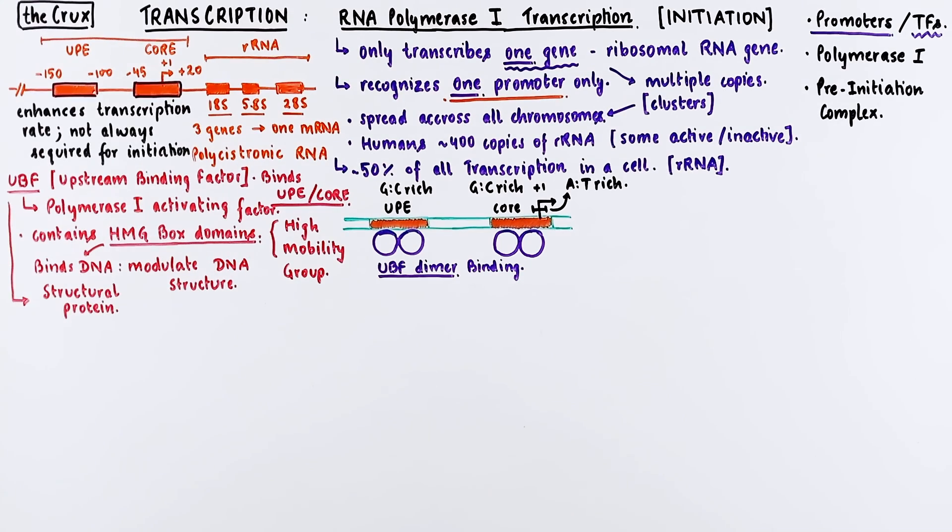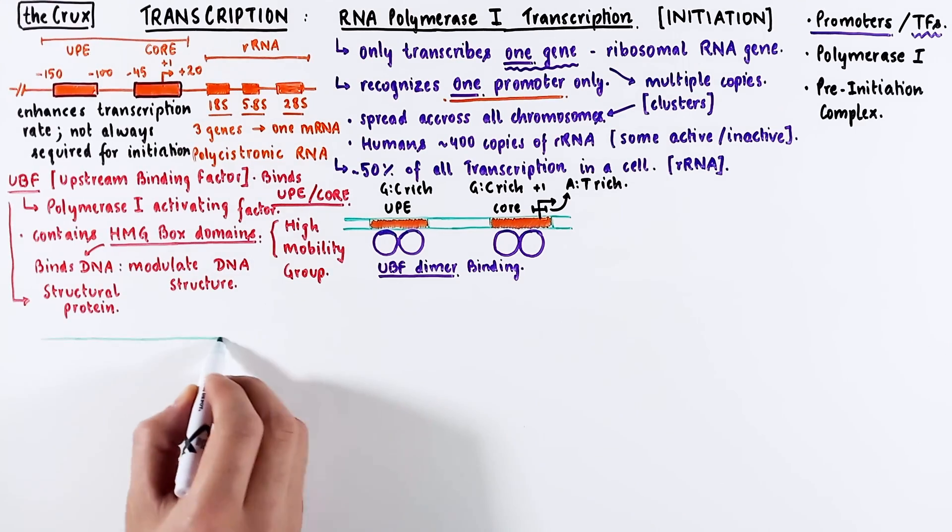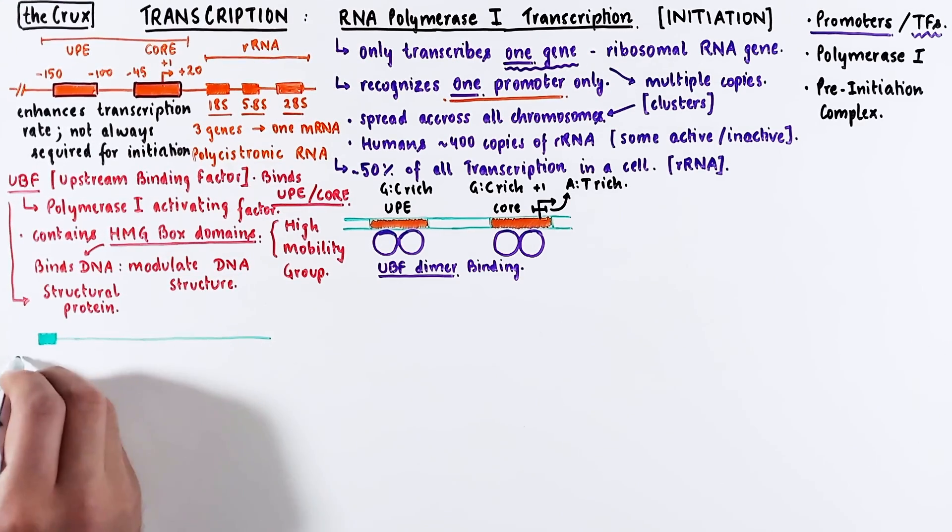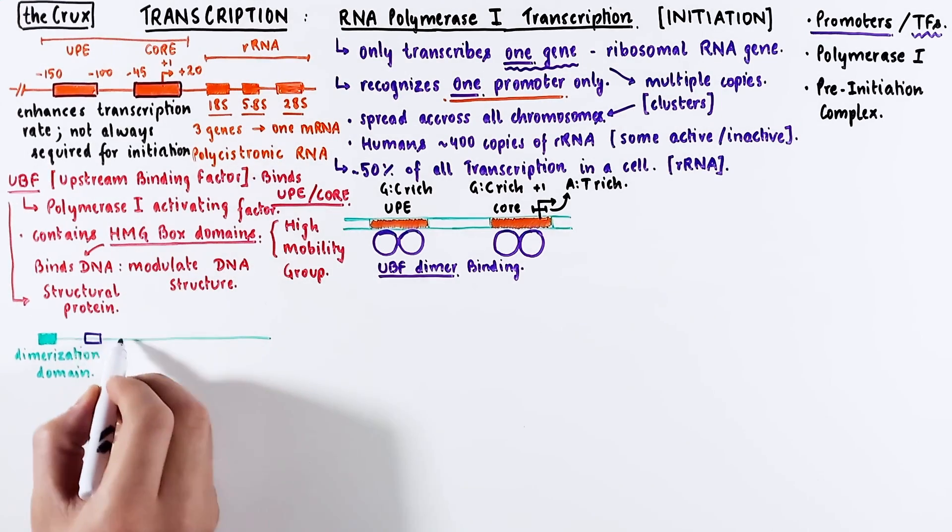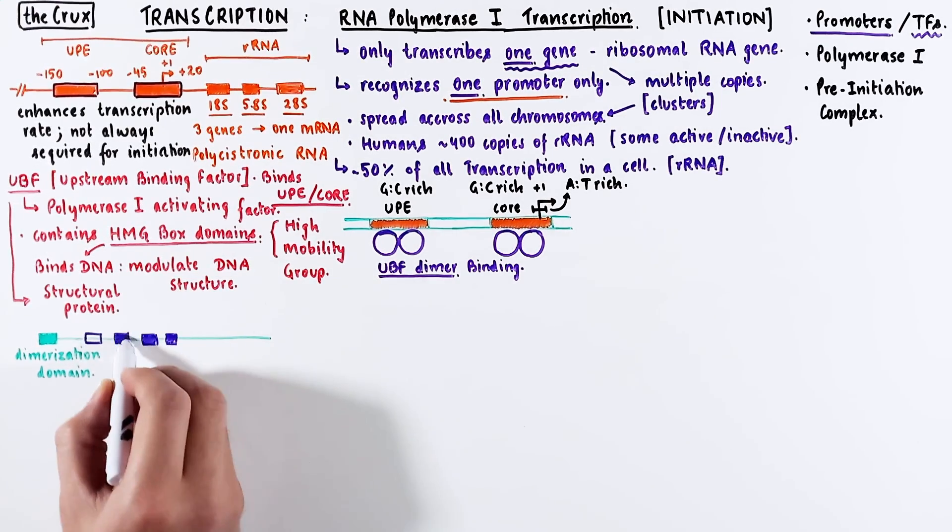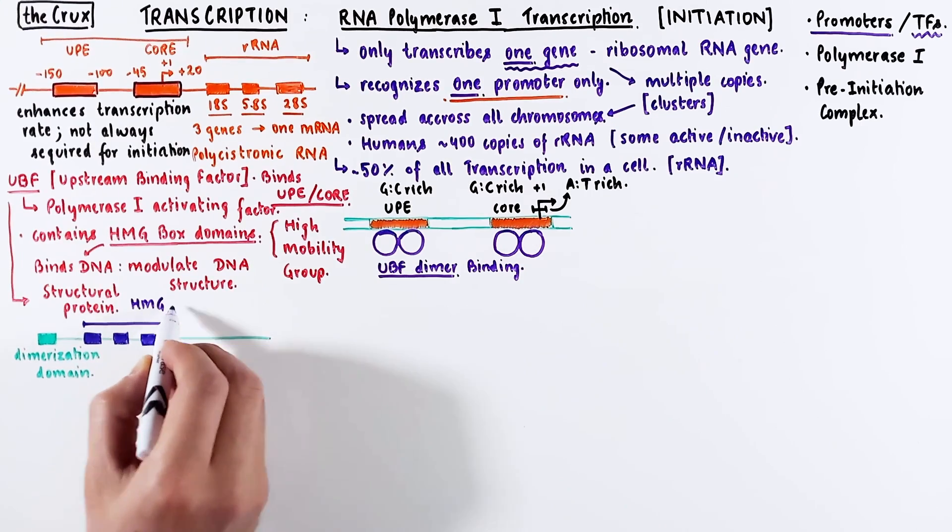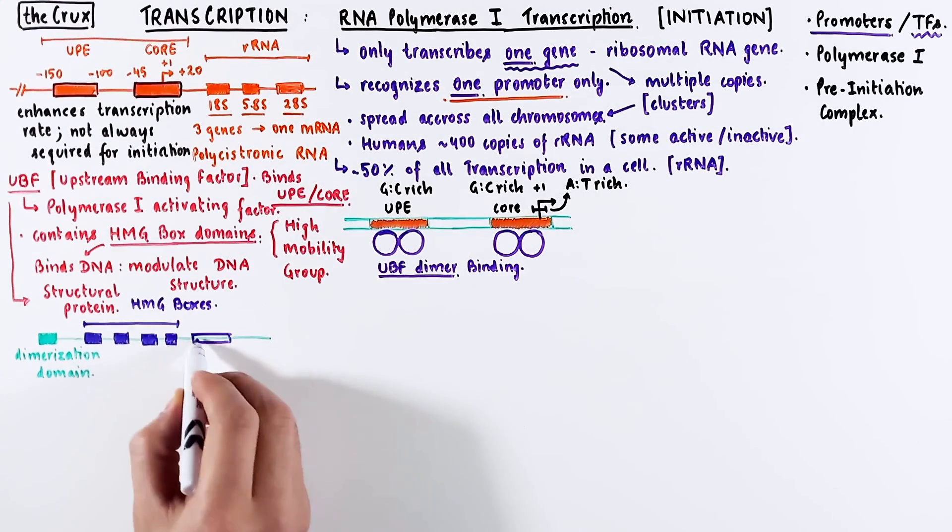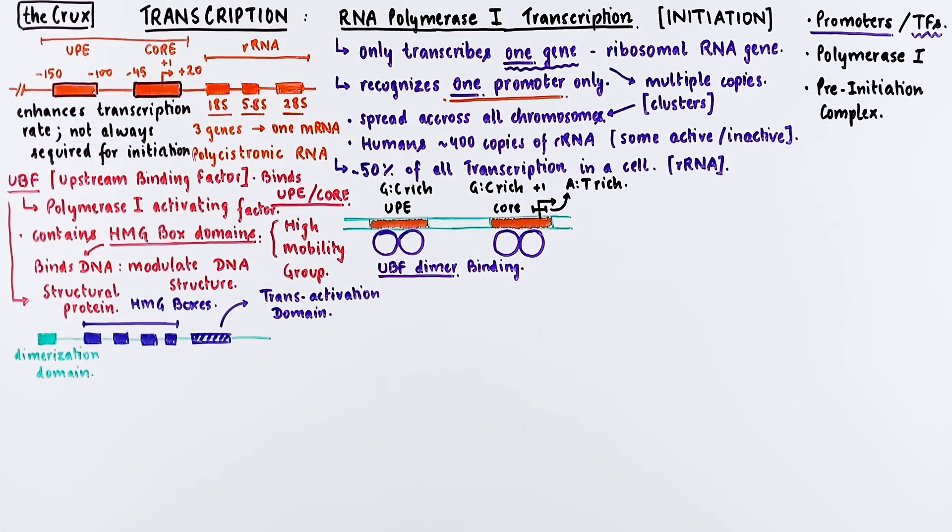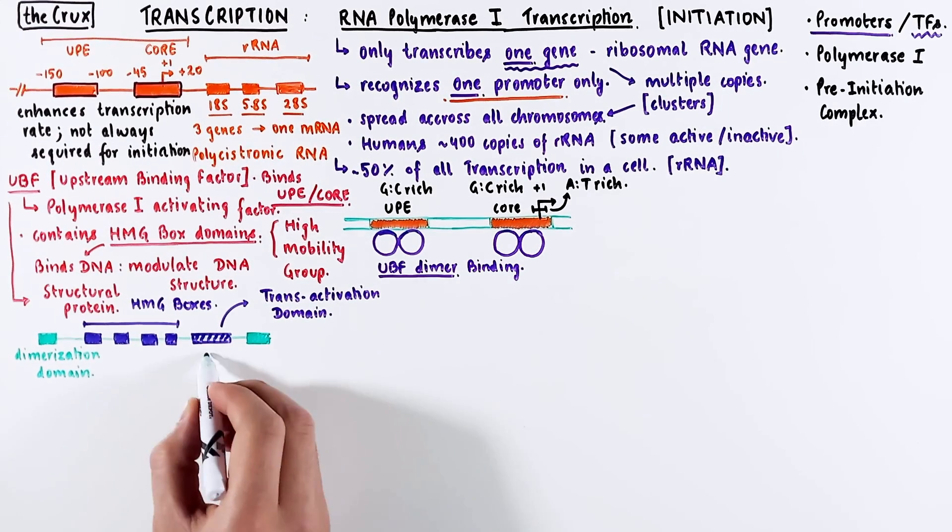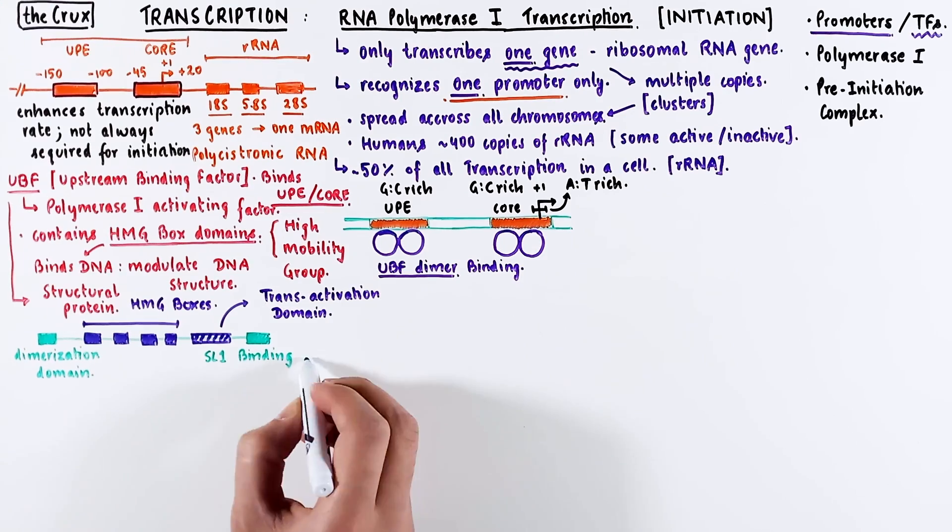For this reason, the UBF can be thought of as a structural protein. If you look at the monomeric form of the UBF protein, you will find there is a dimerization domain at the N-terminus end and the HMG boxes which bind the DNA are in the middle. There are four of these boxes in each monomer. Towards the end, you have a transactivation domain, and at the C-terminus end, there is a SL1 binding domain.